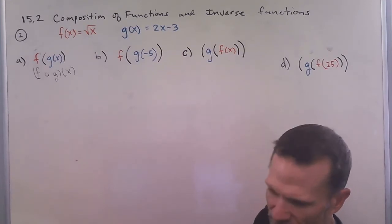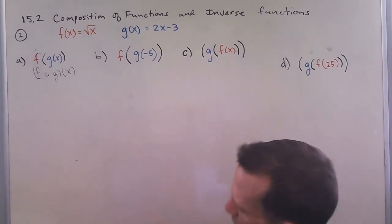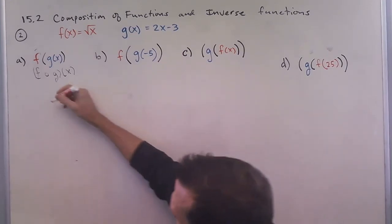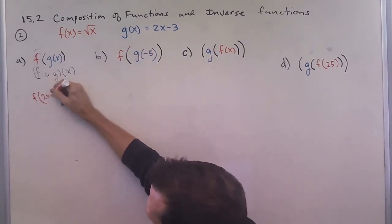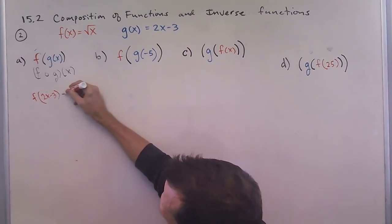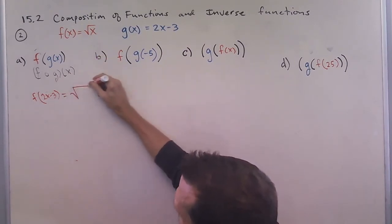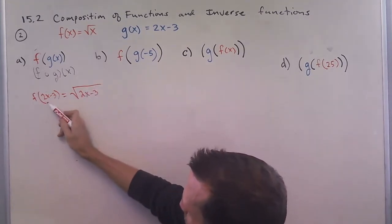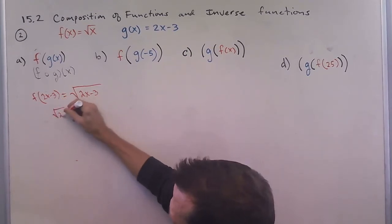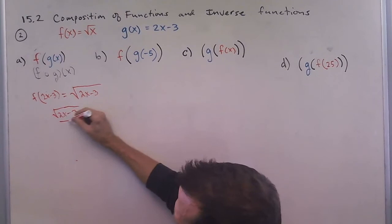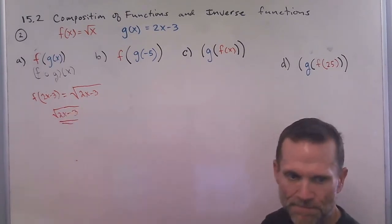So the way that looks then is we're going to think of, okay, we're inserting 2x minus 3 wherever we see an x. So since that's an x, we insert 2x minus 3. And so f composed with g of x is the square root of 2x minus 3. And that's it. There's nothing else we can do with it. It just sits like that.